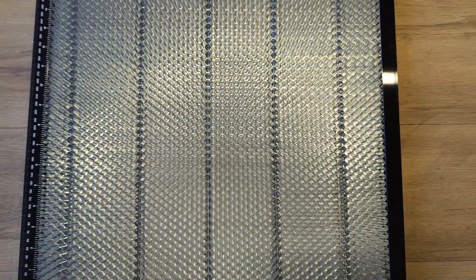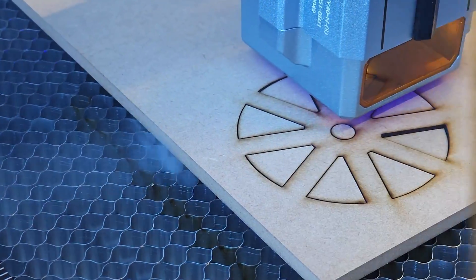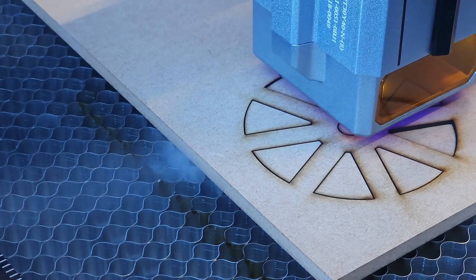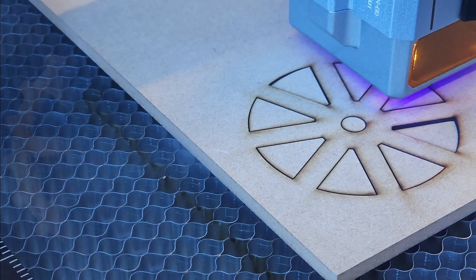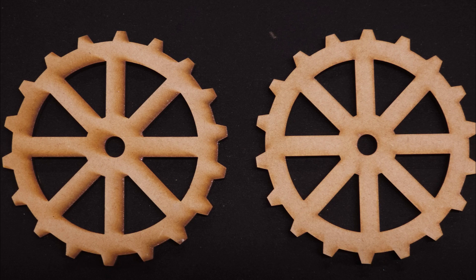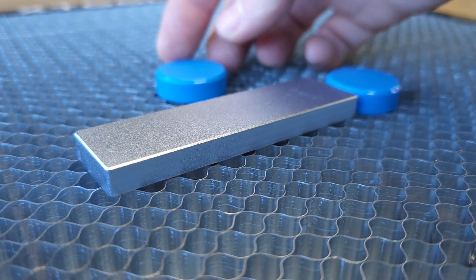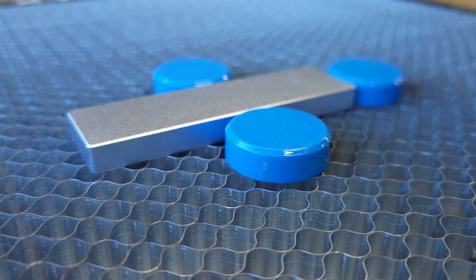Since the K1 features an air assist compressor I highly recommend buying a honeycomb laser bed which allows the smoke and fine particles to vent away from the laser. This produces cleaner cuts and helps to keep the laser lens clean. This bed made by X-Tool uses a steel base which means you can use magnets to hold your material in position.